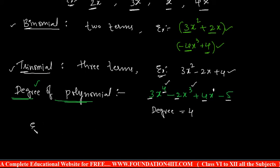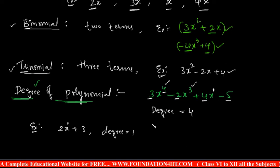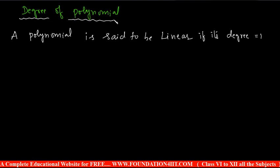One more example: 2x² + x + 3. Here x has no written number, so its power is 1. The highest power of x is 2, so the degree equals 2. Based on the degree, we have four names. If the degree is one, the polynomial is called linear — it is a linear equation or linear expression.